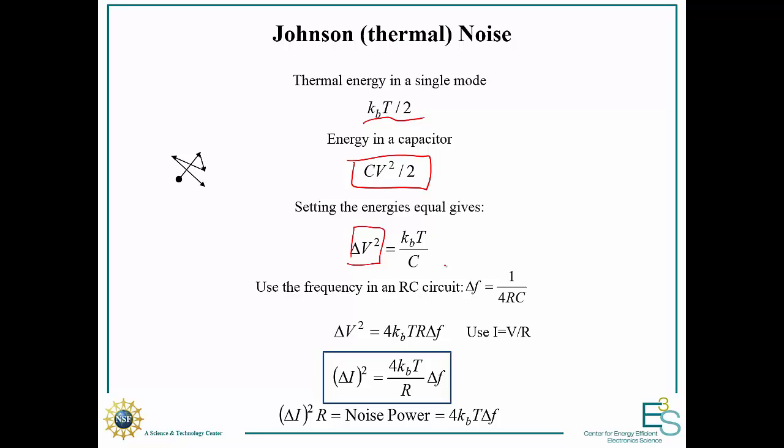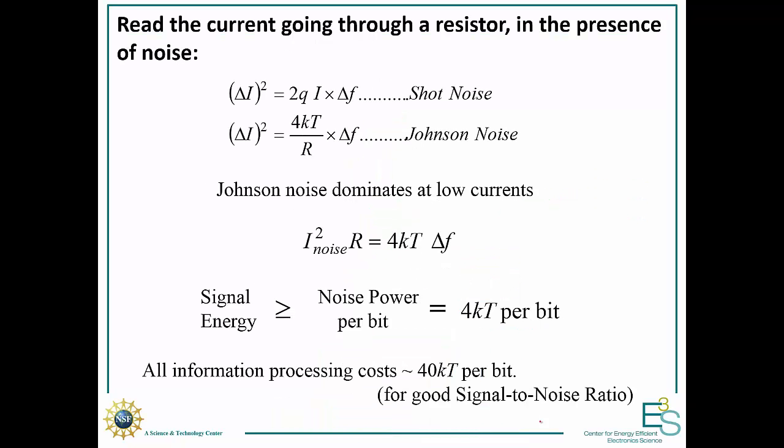We can convert this to a bandwidth by assuming we have an RC circuit charging our capacitor. We charge our capacitor through some resistor. Our frequency is 1 over 4 RC. Plugging that in, we find that our noise voltage is 4 kT R delta F. We can convert that to current using V equals IR. For noise power, I squared R, we see that it's 4 kT per bit. For every bit of information, there's going to be 4 kT noise present. That's the noise we need to overcome.